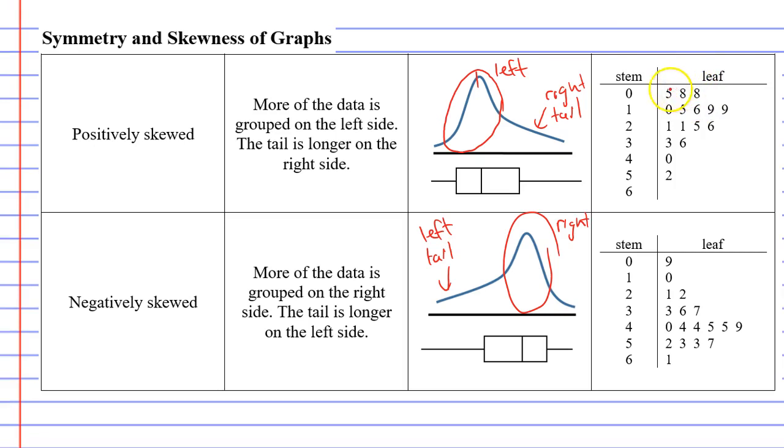If we look at the stem and leaf plot, we've got the numbers. I'll actually write them down for you. Let's look at this one and call this stem and leaf plot 1 and stem and leaf plot 2. If we were to write the data for stem and leaf plot 1, you've got 5, 8, 8, then you've got 10, 15, 16, 19, 19, and so on.